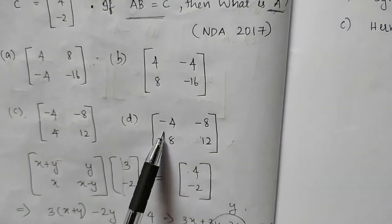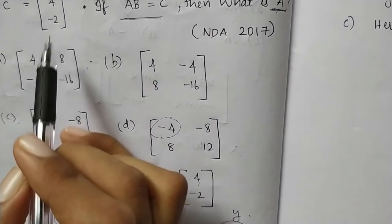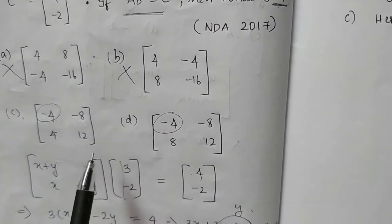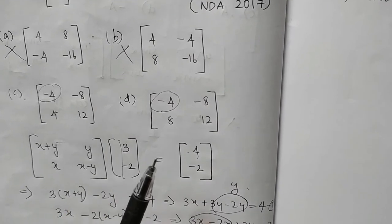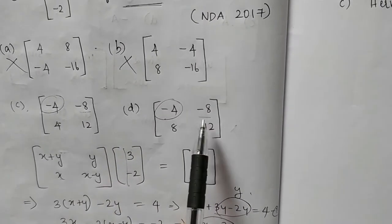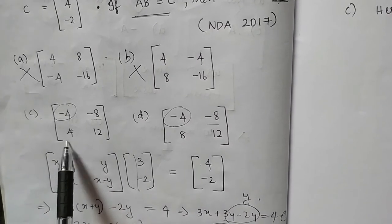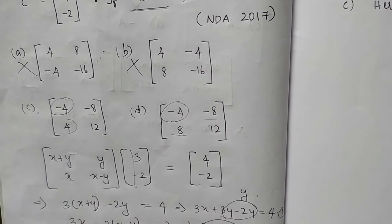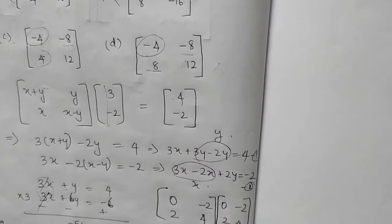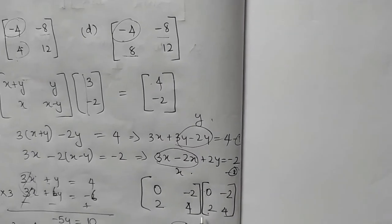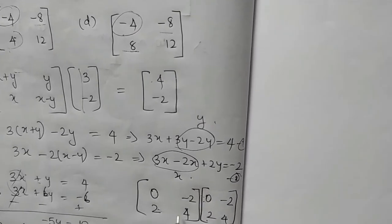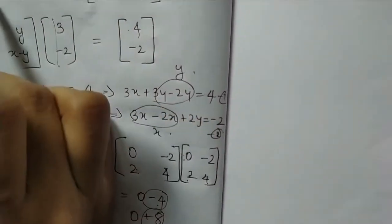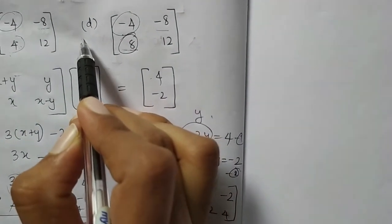Checking the options: in options C and D the first element is minus 4. Options A and B have positive 4, so we check option with minus 8. The second row into first column: 2 times 0 equals 0, and 4 times 2 equals 8. The answer for that element is 8.